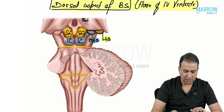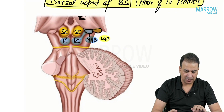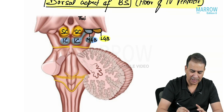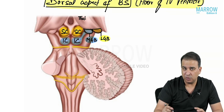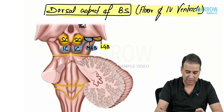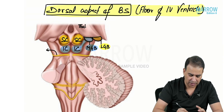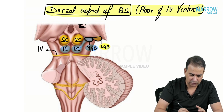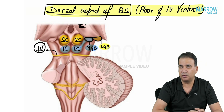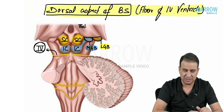Back to the dorsal aspect of the brainstem: the only cranial nerve you will see coming from the dorsal aspect is the fourth nerve — the trochlear nerve. It is the only cranial nerve emerging from the dorsal aspect of the brainstem.